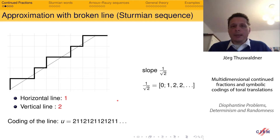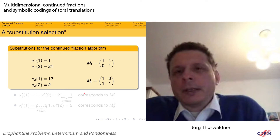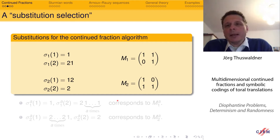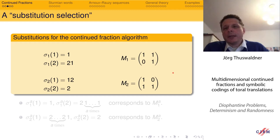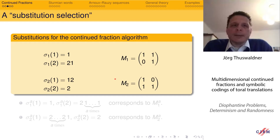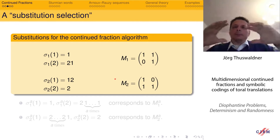A continued fraction algorithm is a machine that writes out matrices — it produces sequences of matrices. At each step you perform in the algorithm, you create a matrix. For instance, if you look at the additive continued fraction algorithm, the matrices you write out are M₁ and M₂. The classical continued fraction algorithm is an acceleration of this algorithm. What I want to do is superimpose something on this algorithm: I want to define substitutions related to these matrices.